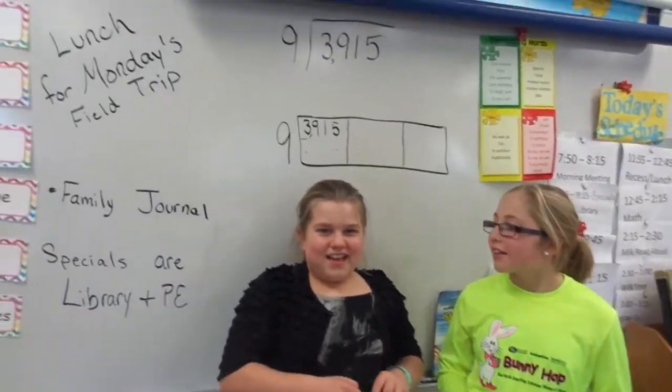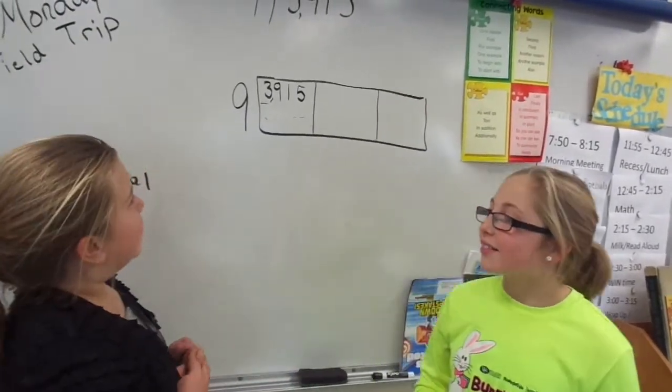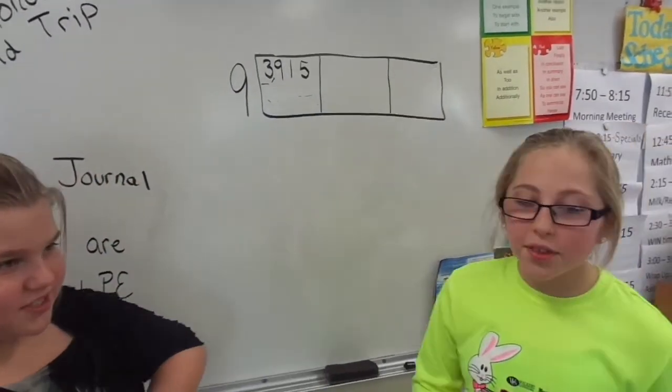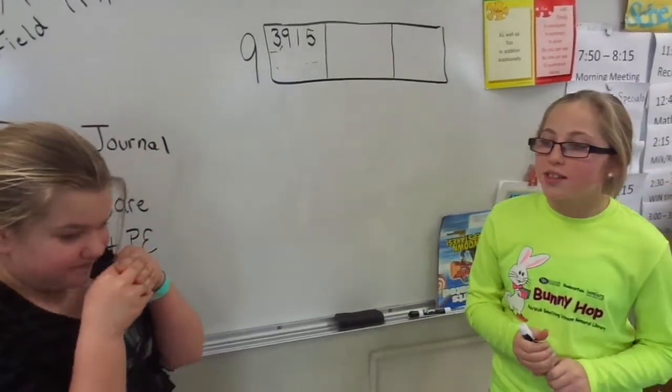Wait. Action. My name's Cadence. My name's Ella. And we're going to be doing the problem 3915 divided by 9 using the place value sections model.